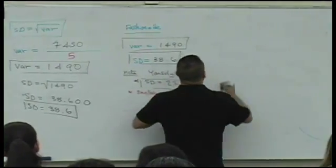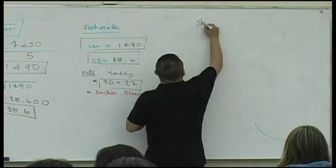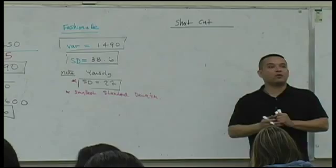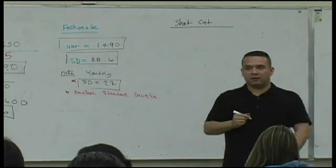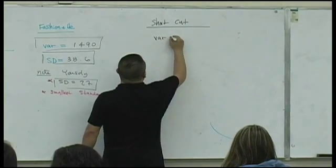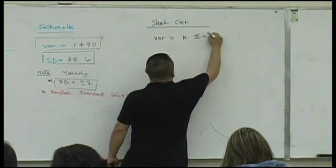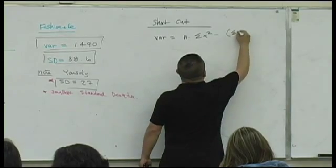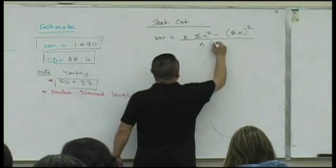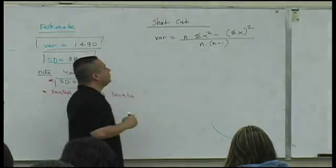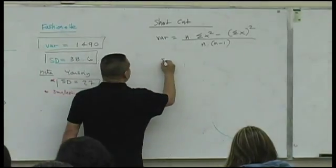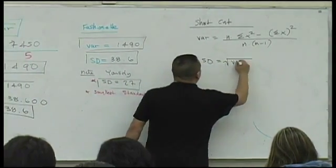I'm going to give you a shortcut formula. You guys want the shortcut formula? All right, here we go. Variance is n times sum x squared minus sum x in parentheses squared. Everything over n times n minus 1. And once again, the standard deviation is the square root of the variance.